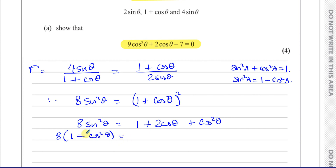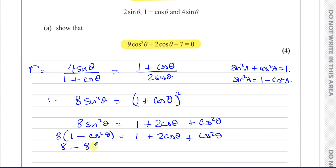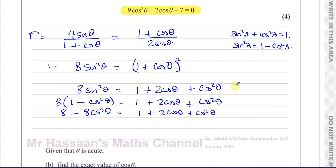Substituting, the left side becomes 8(1 − cos²θ). The right side stays as 1 + 2 cos θ + cos²θ since those are already in terms of cosine. Now expanding: 8 − 8 cos²θ = 1 + 2 cos θ + cos²θ.